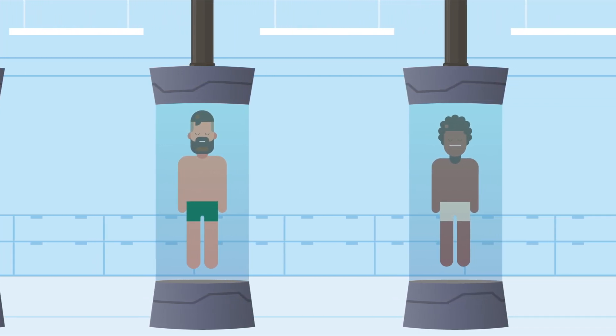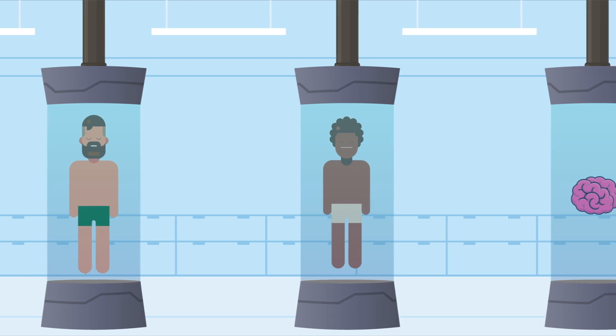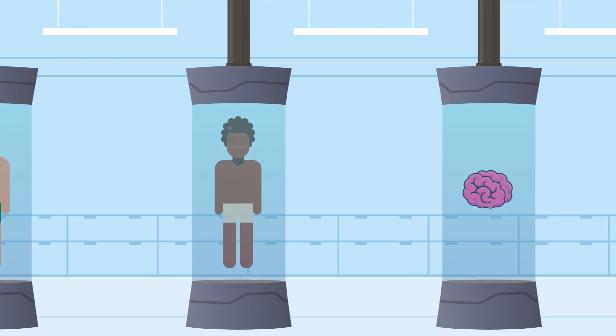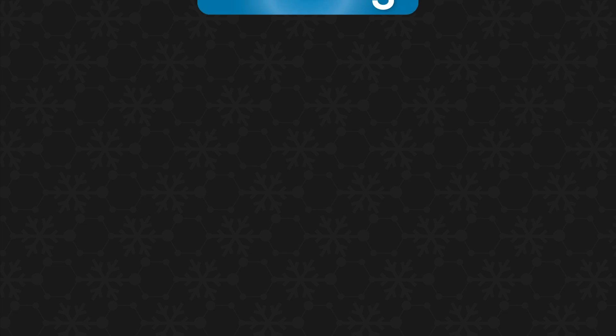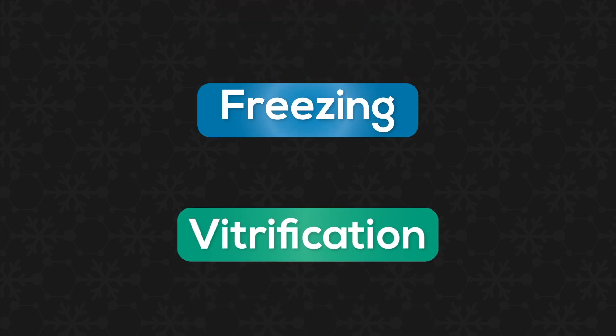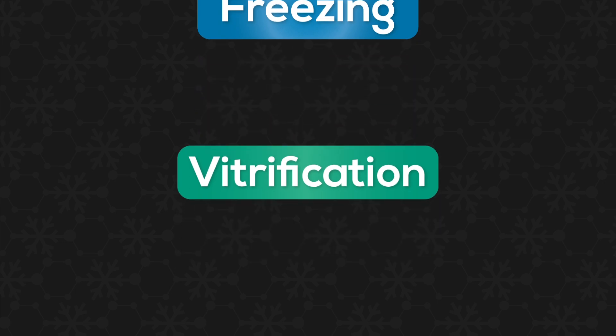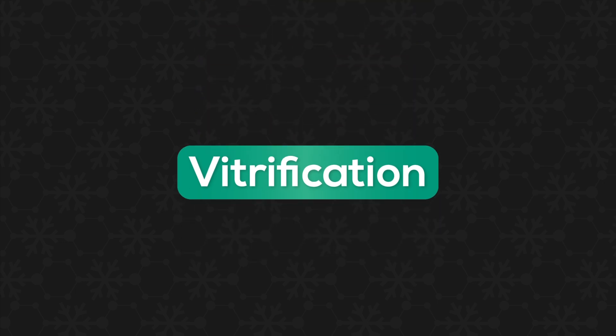Today, cryopreservation methods are used to preserve bodies as well as the brain alone. There are mainly two methods for cryopreservation: freezing and vitrification. However, we will focus on vitrification in this video as that is the preferred method for cryopreserving human bodies.